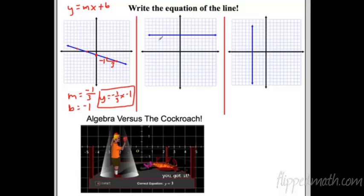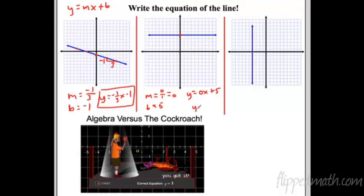Special cases: the first is a horizontal line. Its y-intercept is at 5. What's the slope? It rises nothing — zero — over any run. So you can write y equals 0x plus 5, but since zero times anything is zero, it simplifies to just y equals 5. That gives you a horizontal line at y equals 5.